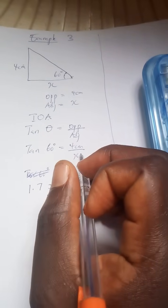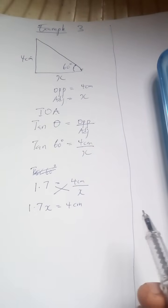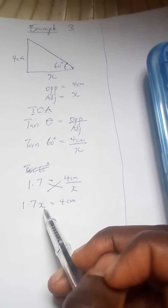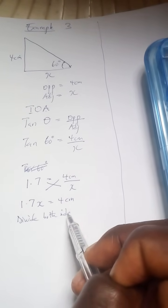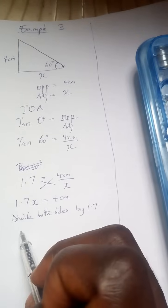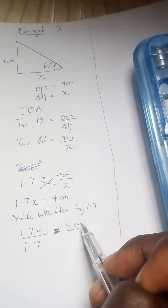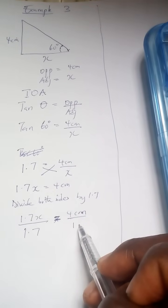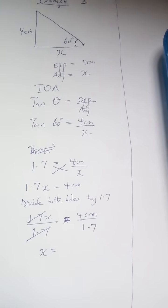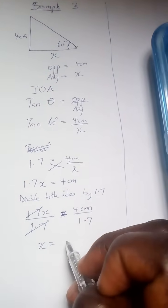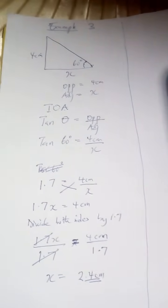Cross-multiplying: 1.7 × X equals 4 cm. Dividing both sides by 1.7, X equals 4 cm divided by 1.7, which gives X equals 2.4 cm. That's our answer for Example 3.